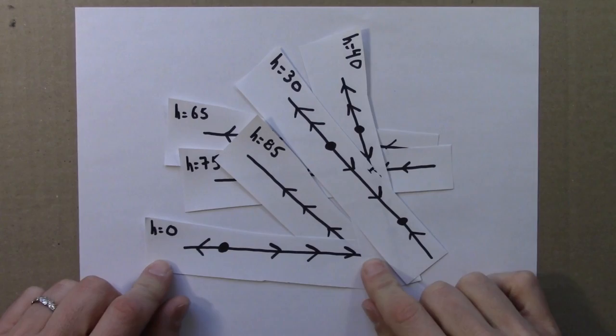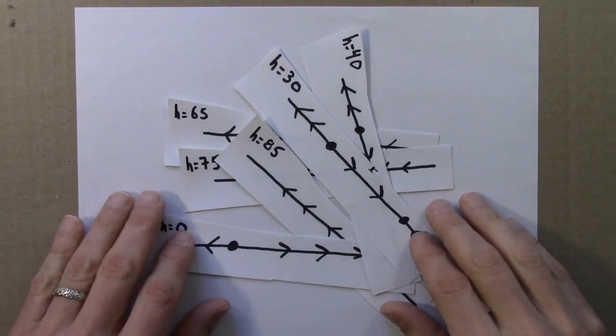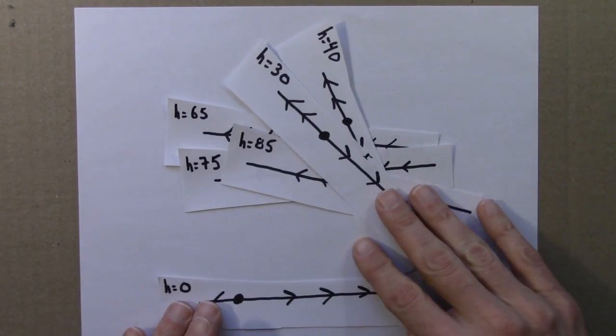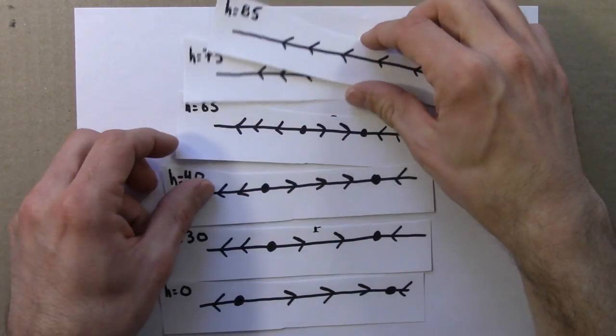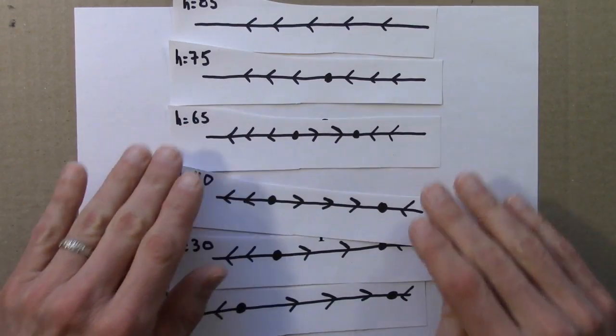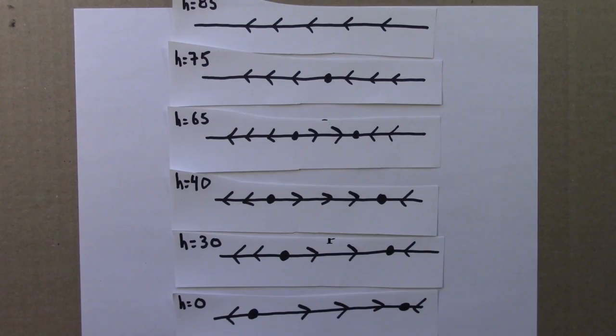So I've cut the phase lines off of those graphs, and now I have a pile of phase lines. And what I'm going to do next is put these in order from maybe smallest h to largest h. So we had 30, 40, 65, 75, and 85.